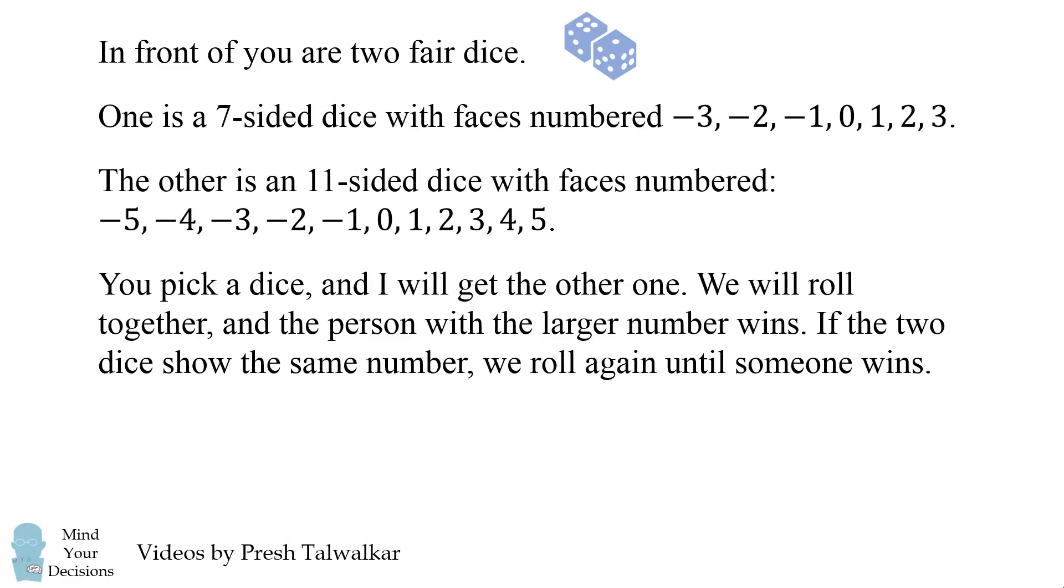You pick a dice, and I will get the other one. We will roll together, and the person with the larger number wins. If the two dice show the same number, we will roll again until someone wins.